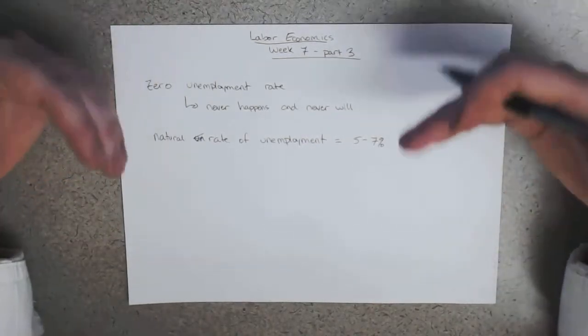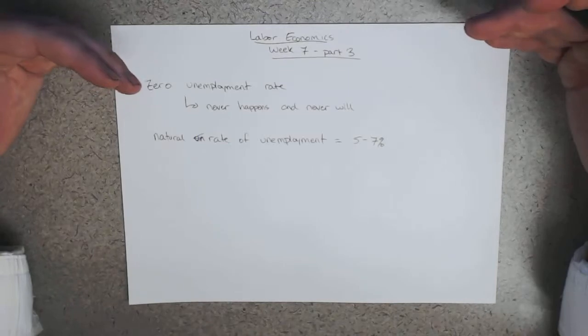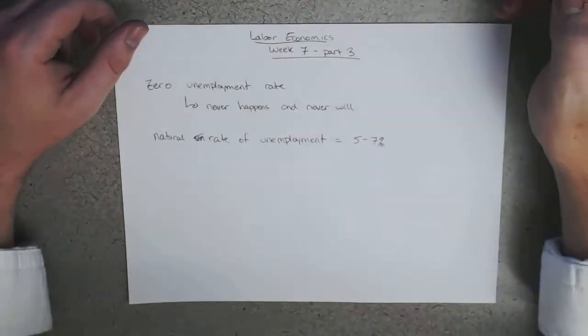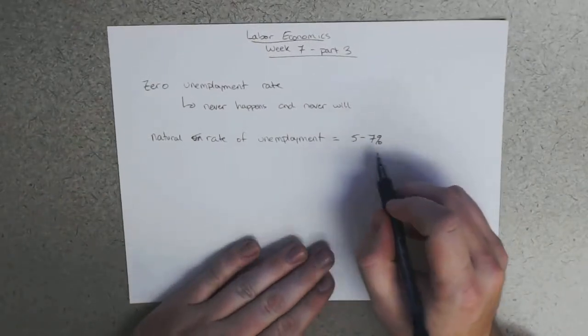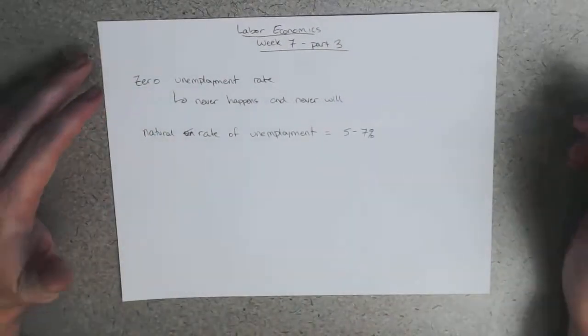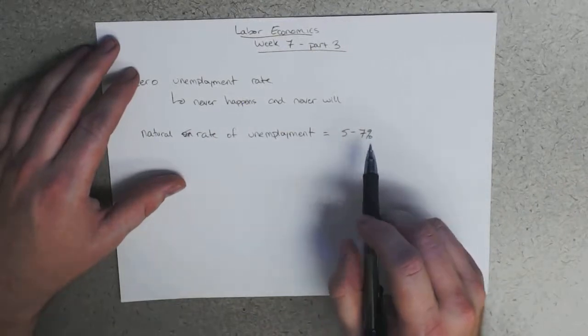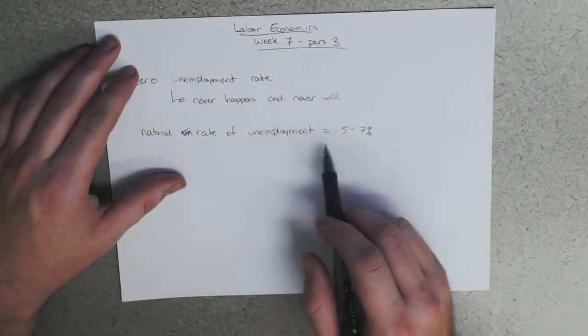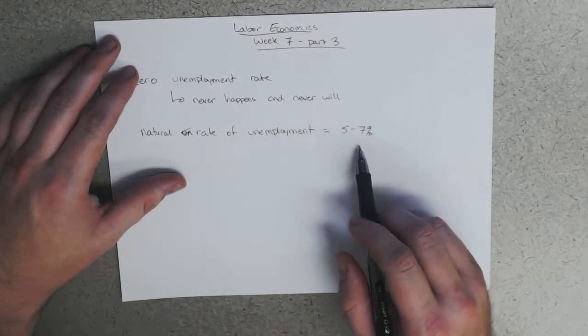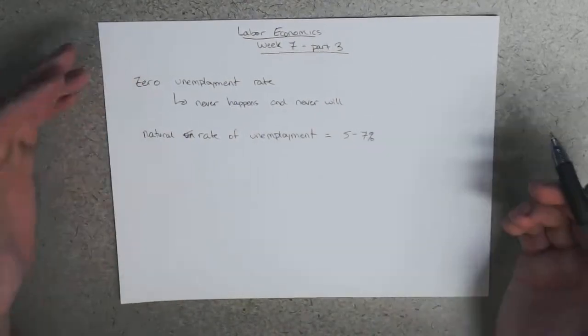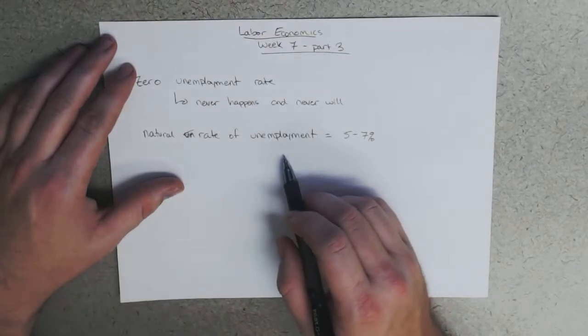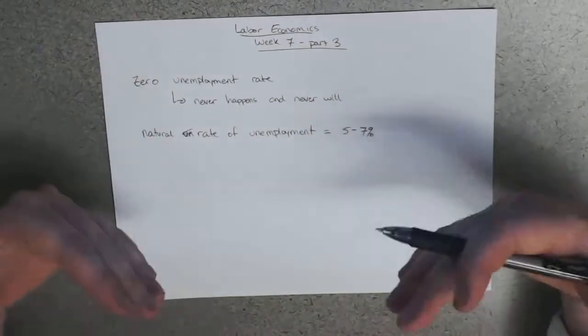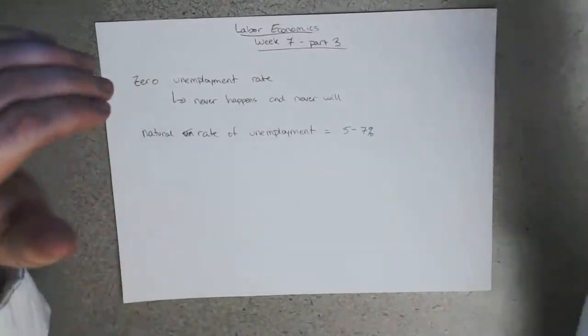So understanding an unemployment rate that's outside of this range—let's accept the textbook's definition of five to seven—if we understand that the unemployment rate below it might be bad and an unemployment rate above it might be bad, or an unemployment rate below five might be good and an unemployment rate above seven might be good, it's all context specific.